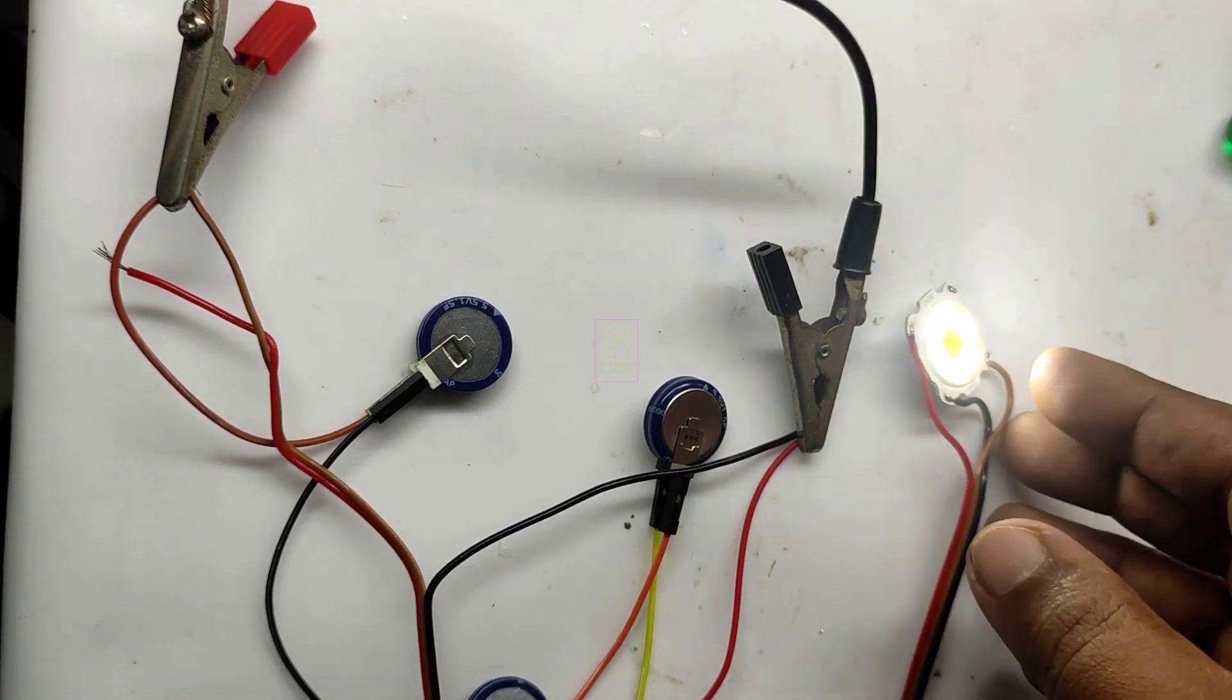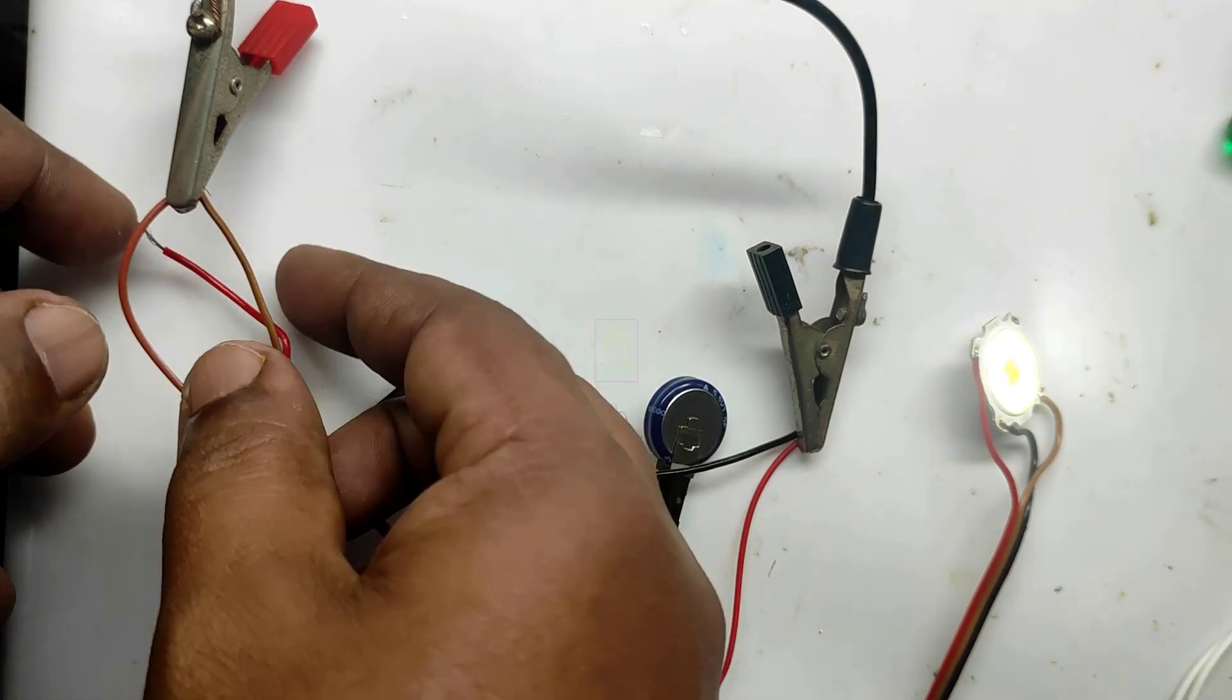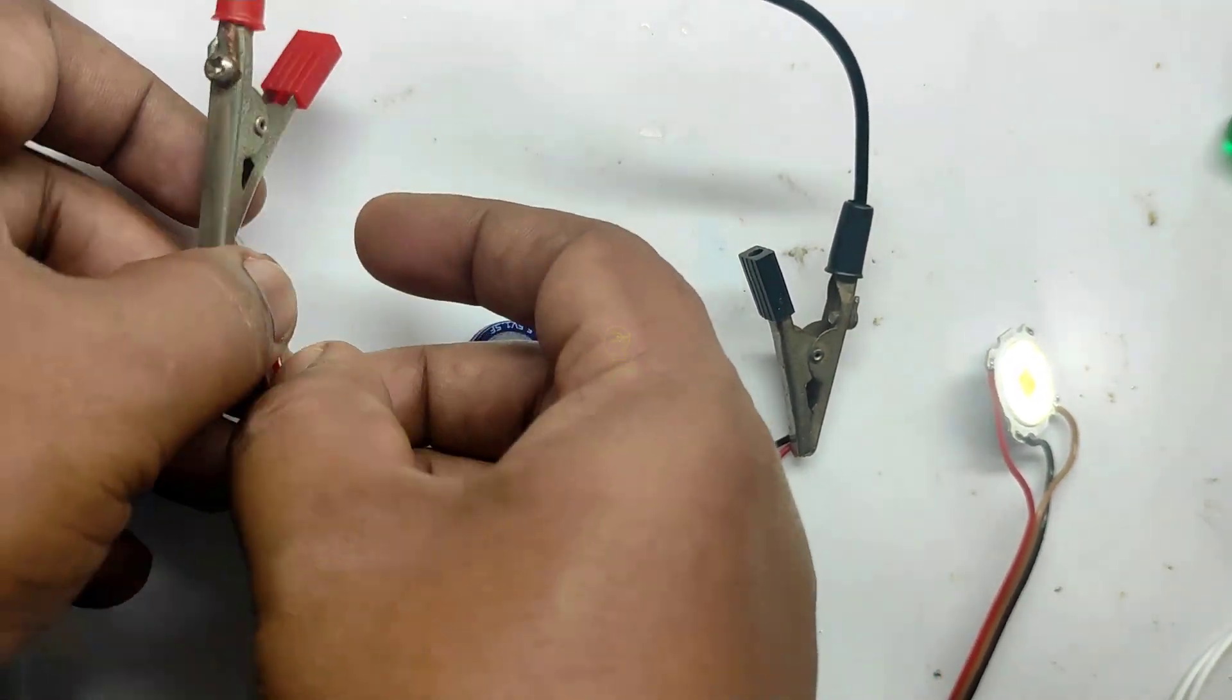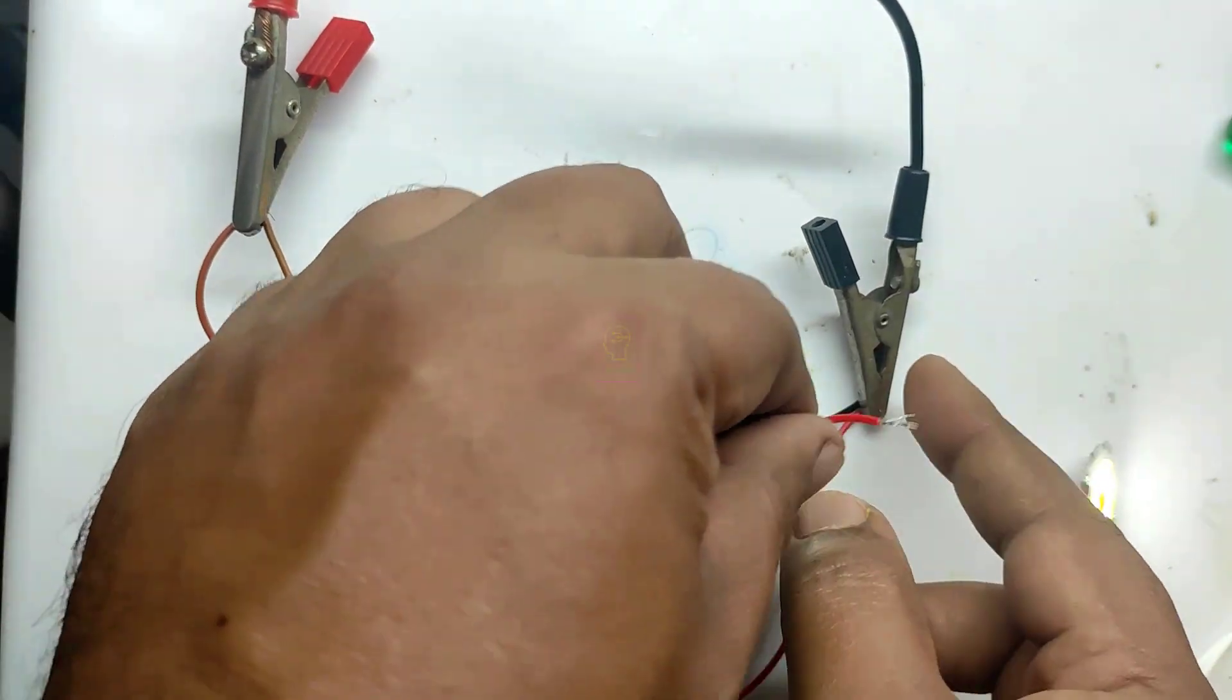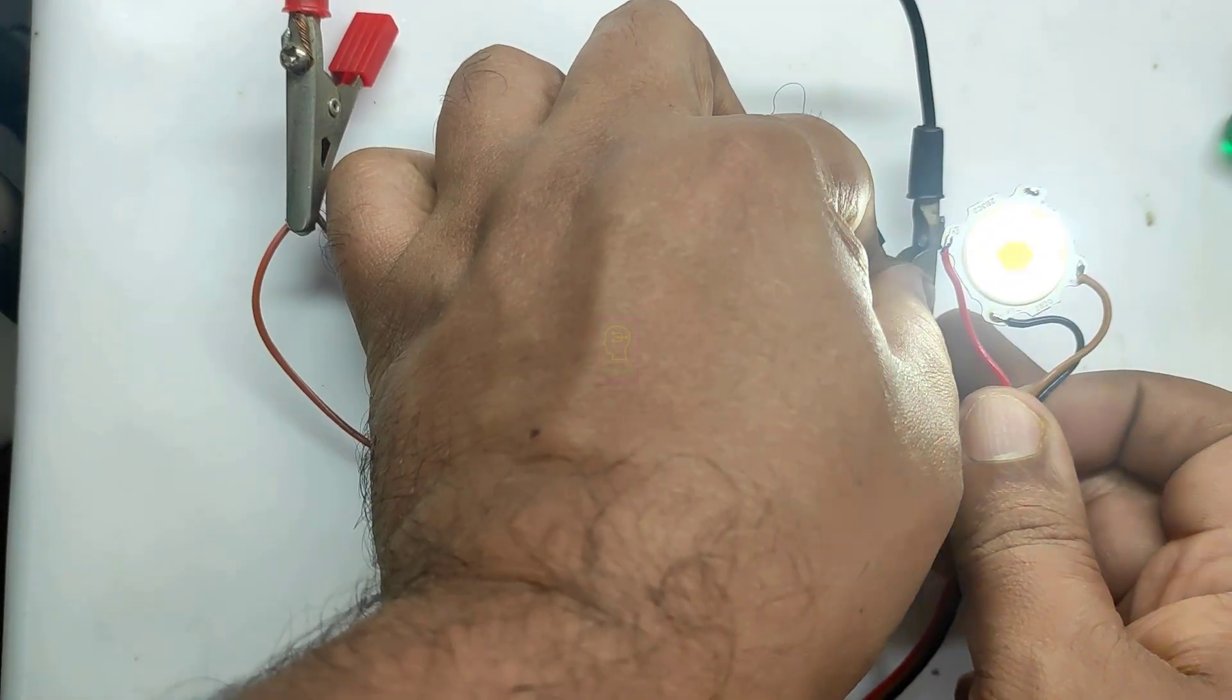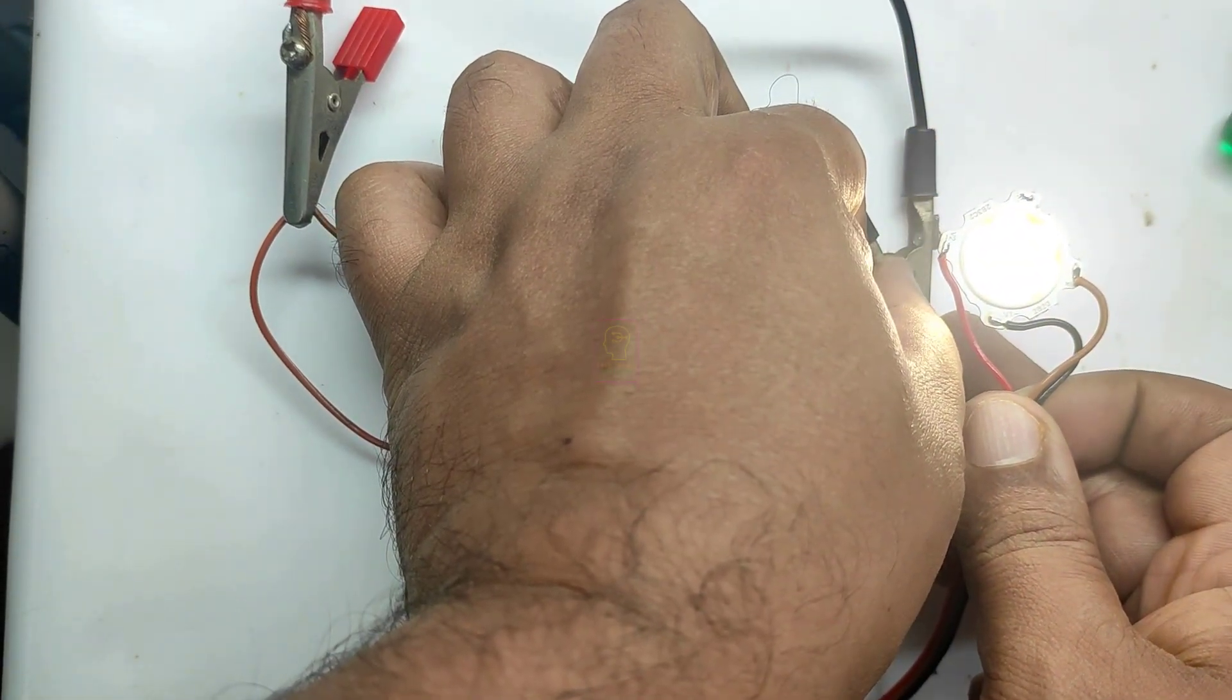The outer ring of the COB LED is white light and the center portion is cool white. Let's see what will happen if I connect the cool light using the capacitor charge.